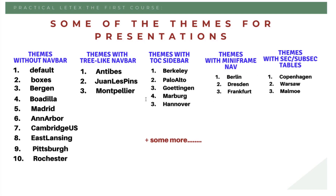The best way to understand these themes is that I will show you in a minute. It's very simple — just one command to change the theme. You change the name of the theme in your use-theme command and you will instantly see the difference. You can see how a theme without a navigation bar looks versus how a theme with a table of contents sidebar looks, all by changing a single name in one command.